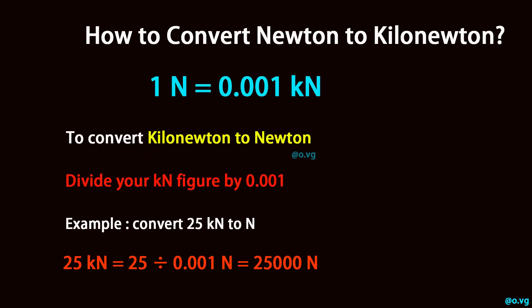To convert kilonewton to newton, divide your kilonewton figure by 0.001. For example, convert 25 kilonewton to newton: 25 kilonewton equals 25 divided by 0.001, which equals 25,000 newton.